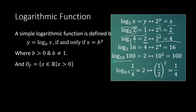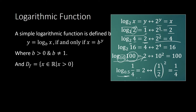How about log of 100 base 10? That is equal to 2 because 10 raised to 2 is equal to 100. The base of our logarithm can be any real number greater than 0. So it can be 0.5 — the logarithm of 1/4 base 1/2 is equal to 2, because 1/2 raised to 2 is equal to 1/4.